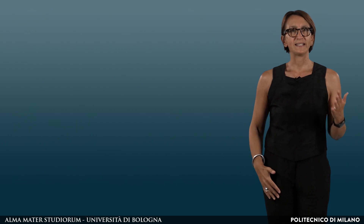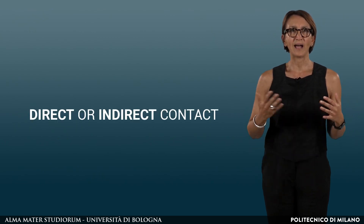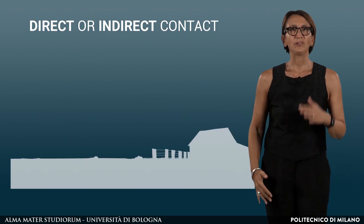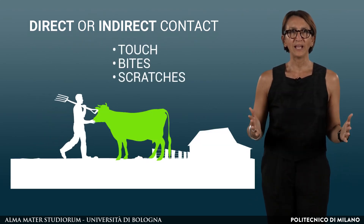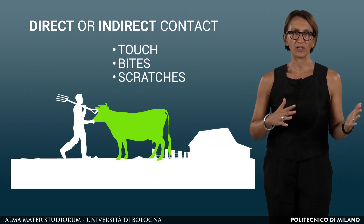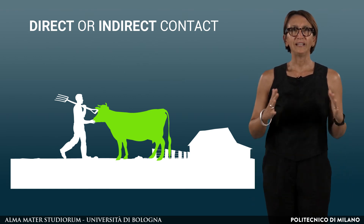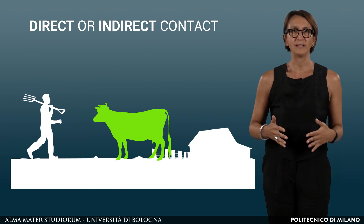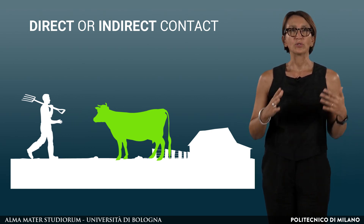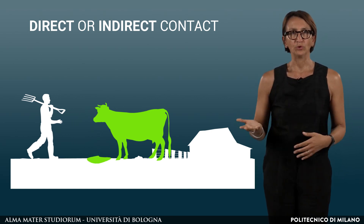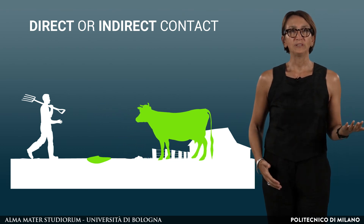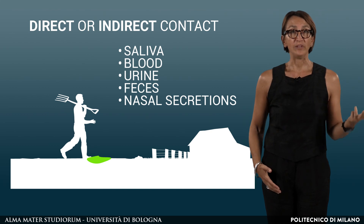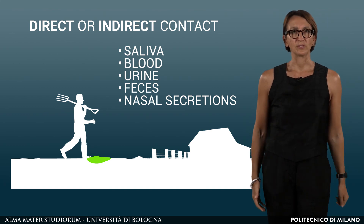During your stay abroad you may experience direct or indirect contact with animals. Direct contact may happen when touching animals or through bites and scratches. Zoonotic agents can also be transmitted by indirect contact with environments where animals live, or surfaces, objects, water, soil, food contaminated with their saliva, blood, urine, faeces and nasal secretions.